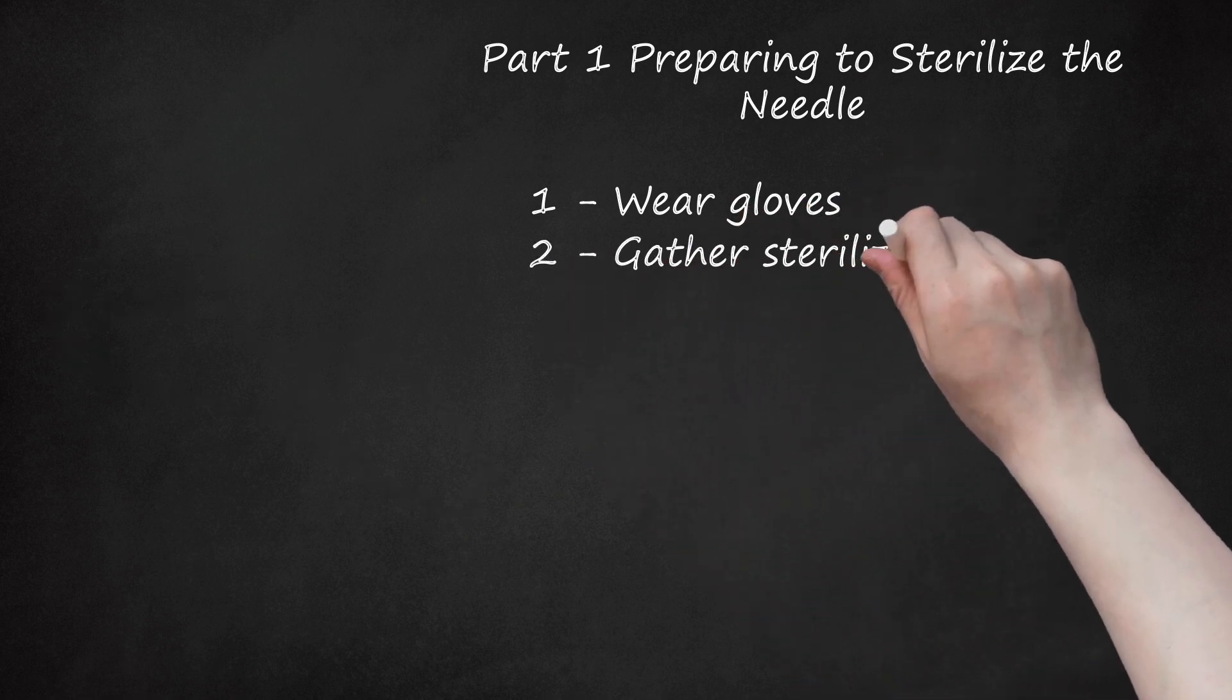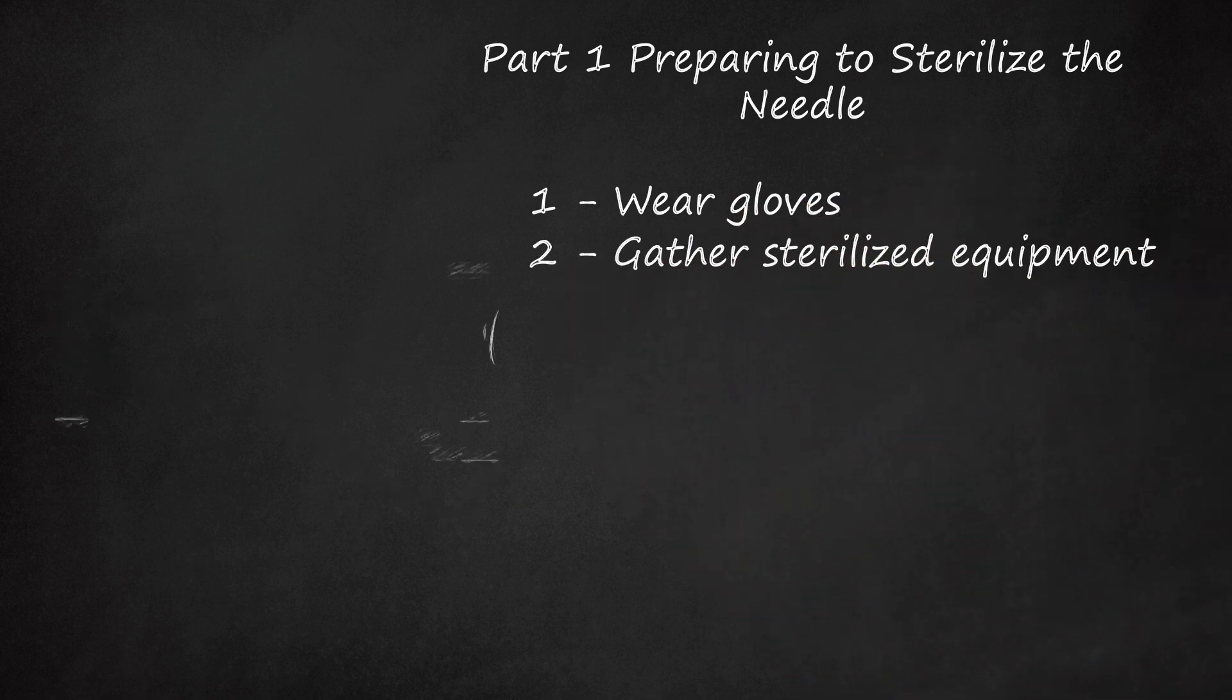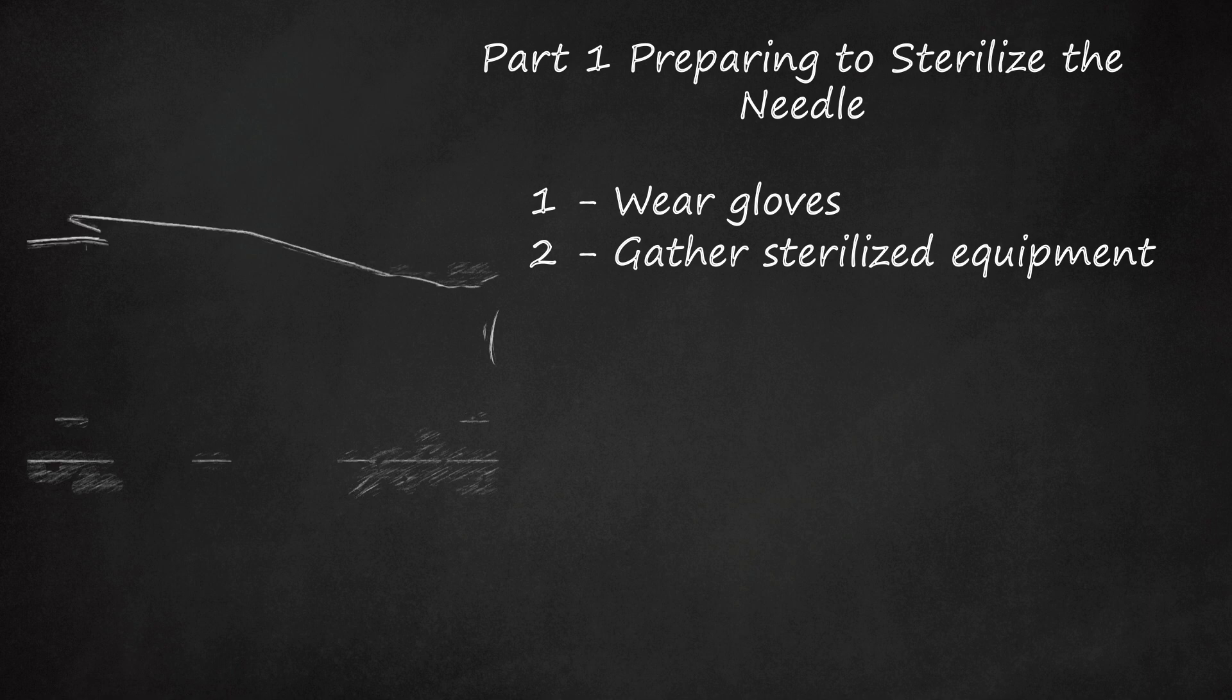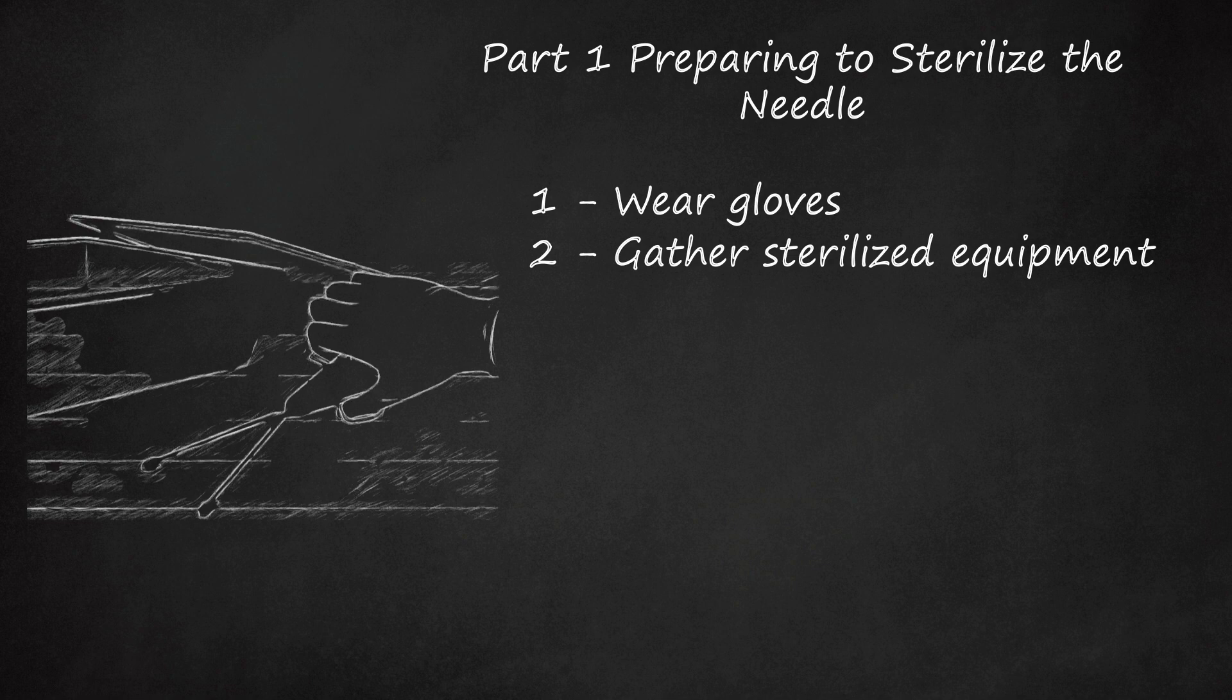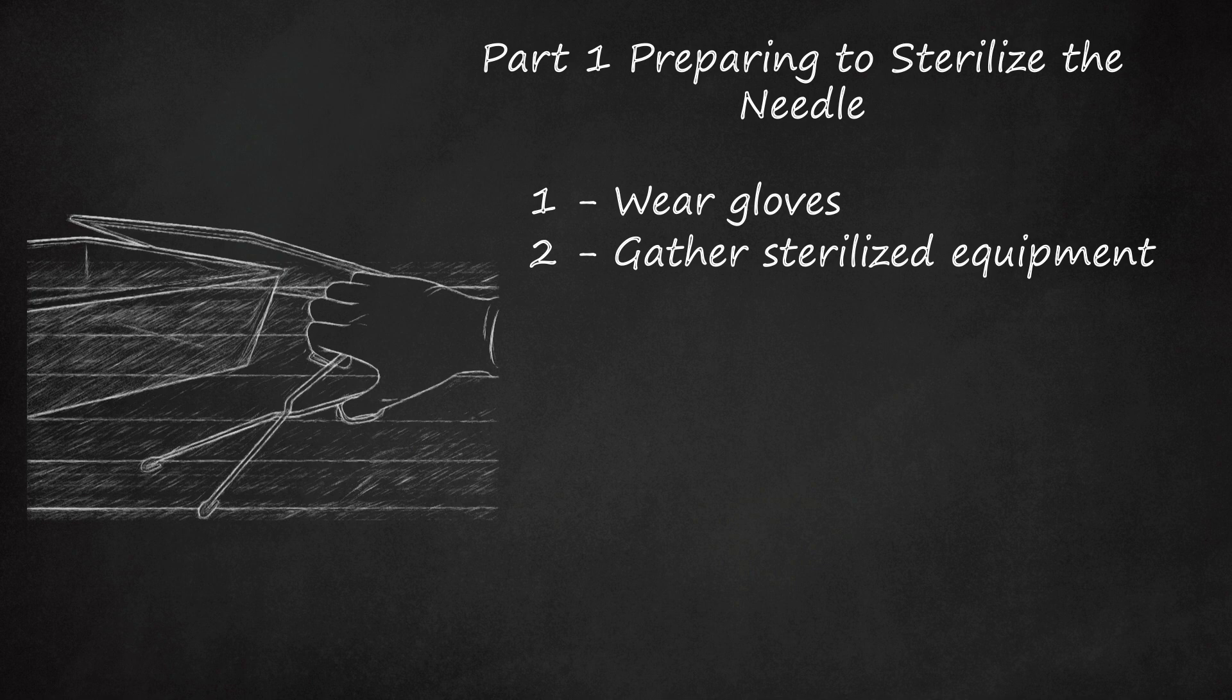Step 2: Gather Sterilized Equipment. When you are sterilizing needles, you need to make sure that you don't contaminate the needle after you sterilize it. Use sterilized tongs or spoons to pick the needle out of whatever device you place it in.